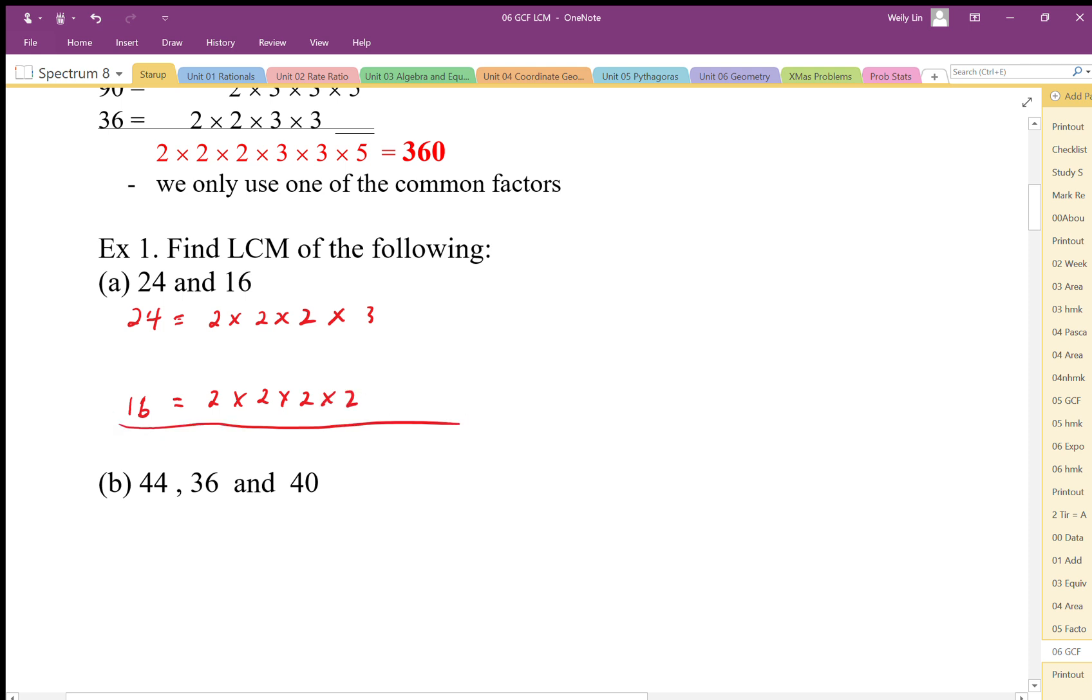When I look at this I can say well this guy's missing a times 3 so I can just add that in and that's my lowest common multiple. Or I can add in a times 2 here and both of those give us the same multiple. So it is a common multiple and that gives us 48 as our lowest common multiple.